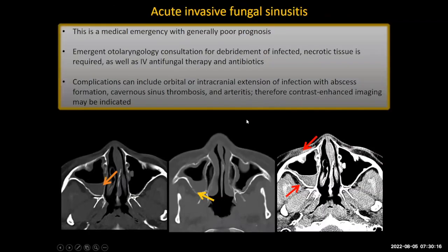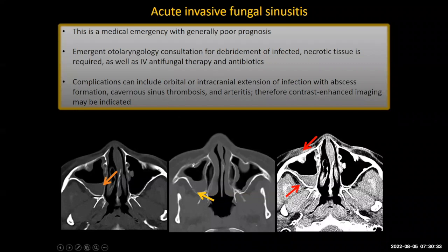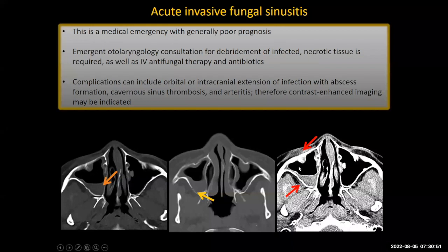This is a medical emergency with a generally poor prognosis. Emergent otolaryngology consultation for debridement of infected necrotic tissue is required. This patient is likely going to need broad-spectrum antifungal therapy and antibiotics. Complications can occur — including intracranial extension with abscess formation, orbital extension, cavernous sinus thrombosis, and arteritis. So it's a good idea, if possible, to give intravenous contrast on CT to these patients.